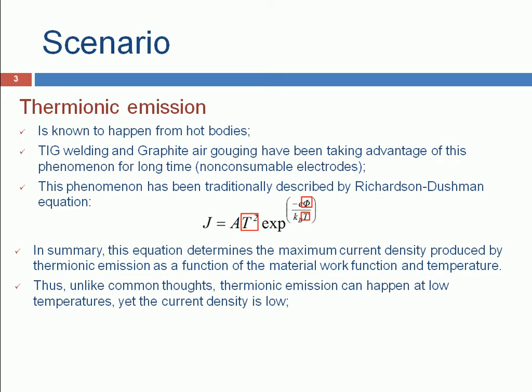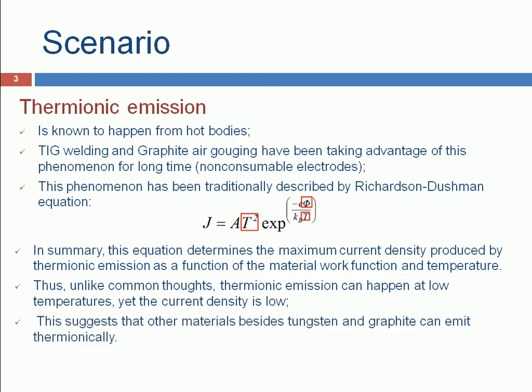Thus, unlike common thought, thermionic emission can happen at low temperatures, yet the current density is low. This suggests that other materials besides tungsten and graphite can emit thermionically. But why are not other materials used as non-consumable electrodes in welding?